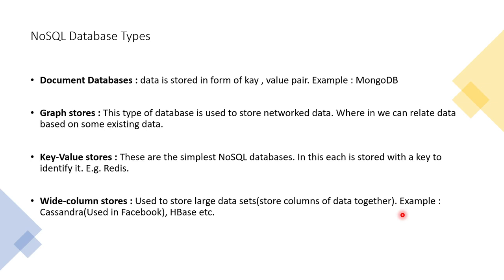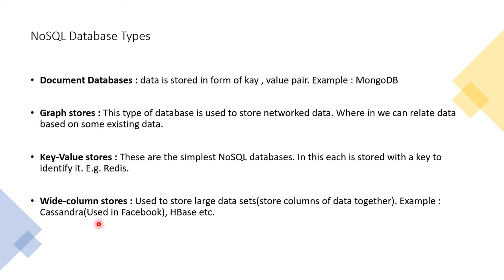These are the different types of NoSQL databases. We have a document database, which is MongoDB — data is stored in the form of a document with a field and its value. Then we have graph stores, where we store network data and relate to existing data. There are also key-value stores, the simplest form of NoSQL — a key and a relevant identity, for example Redis. And wide column stores, like Cassandra, used to store large datasets by storing columns of data together.